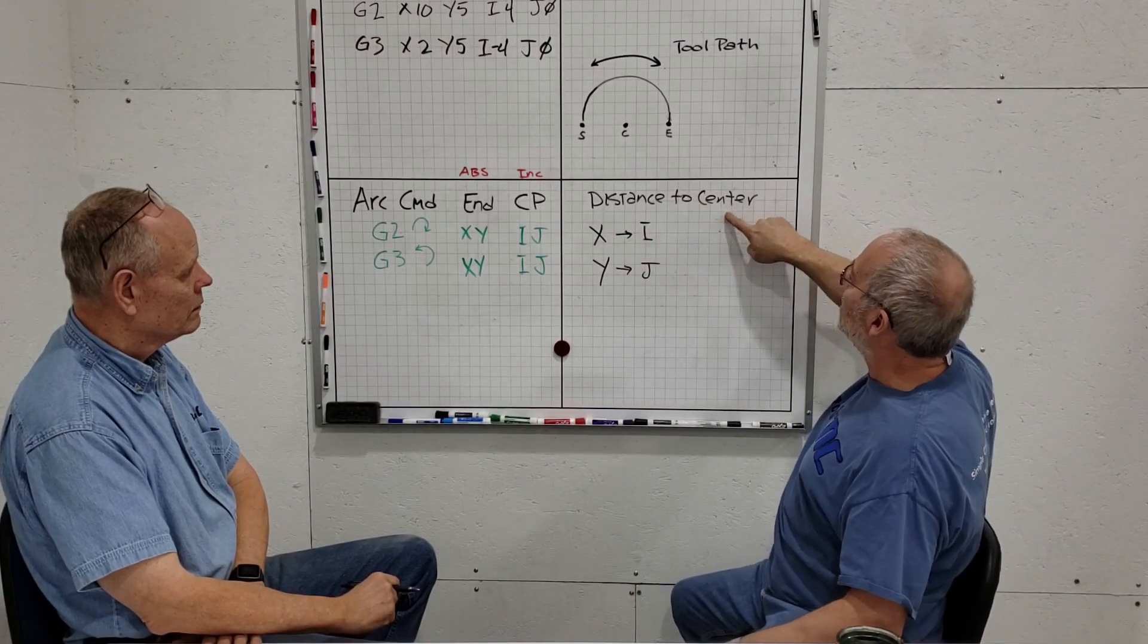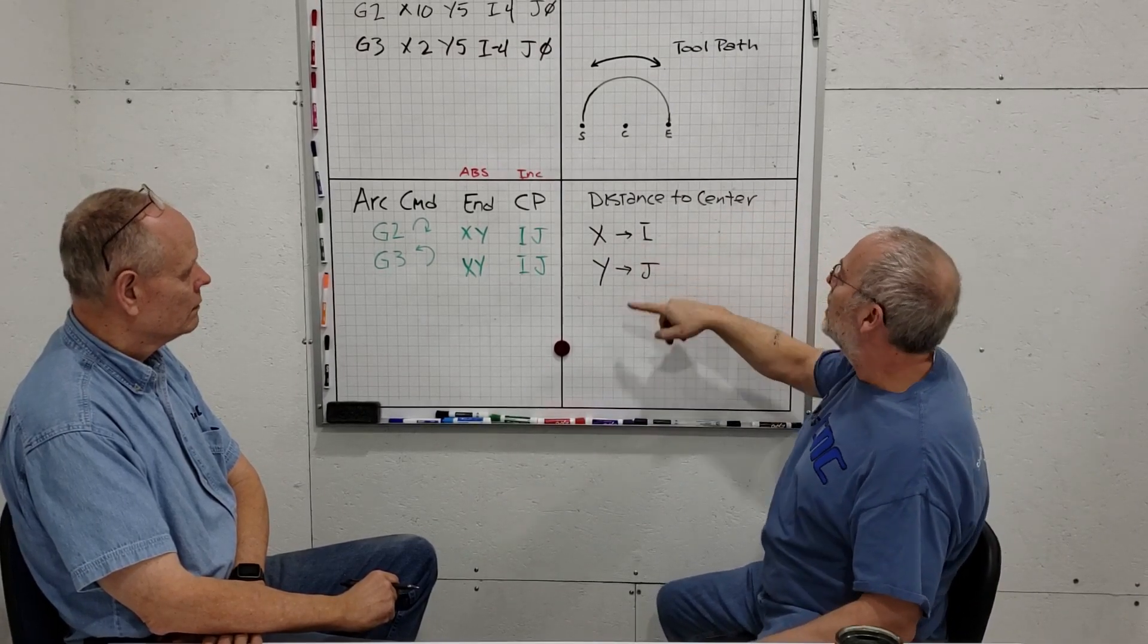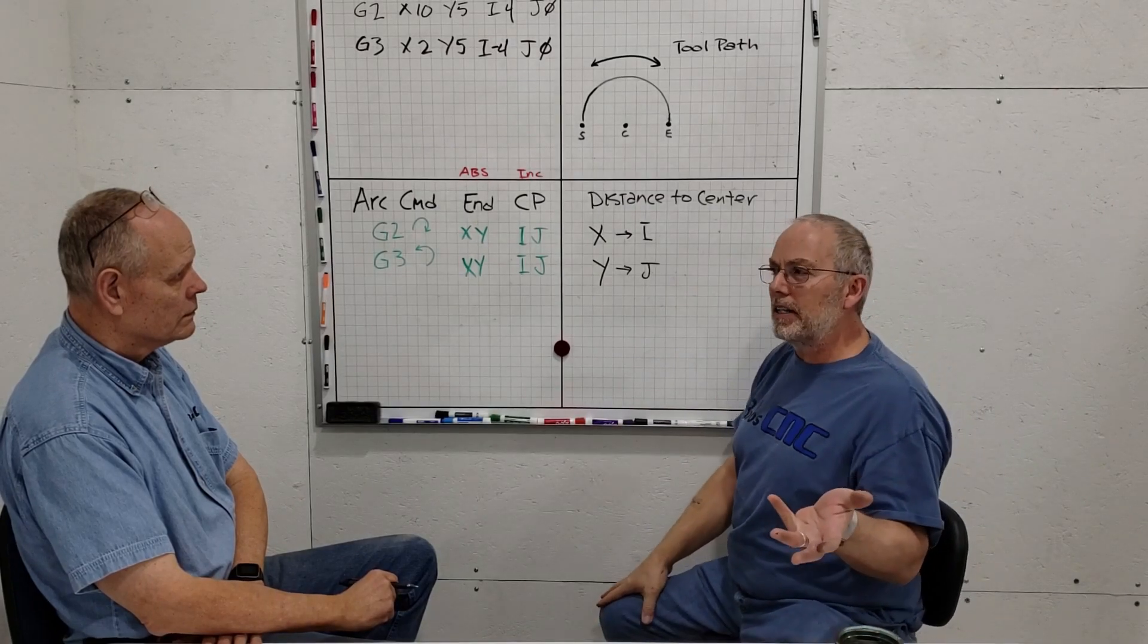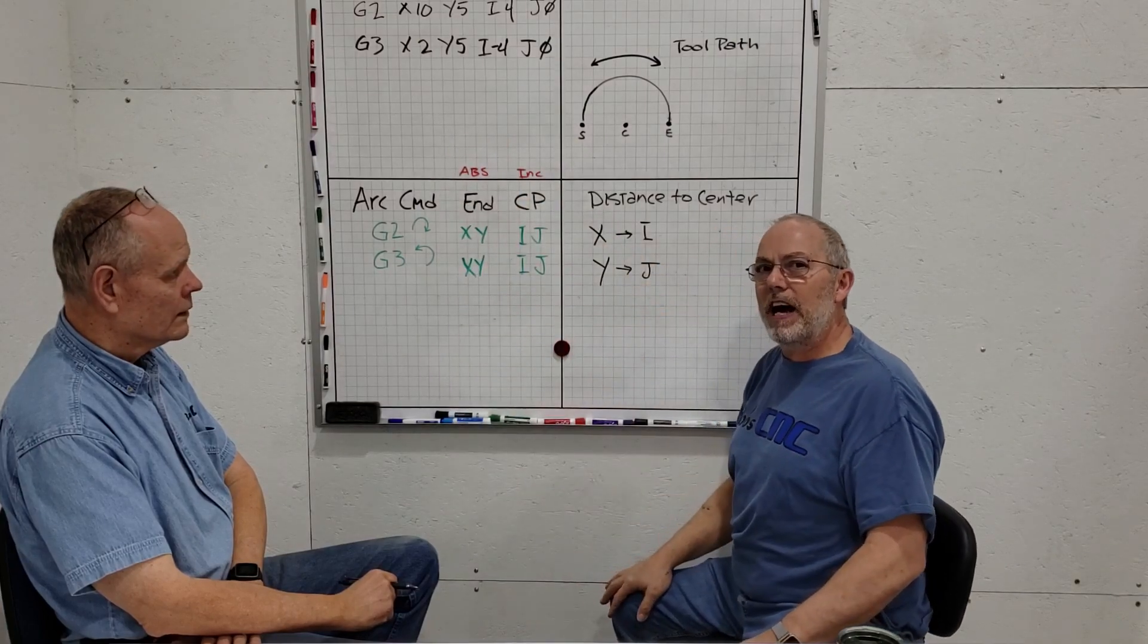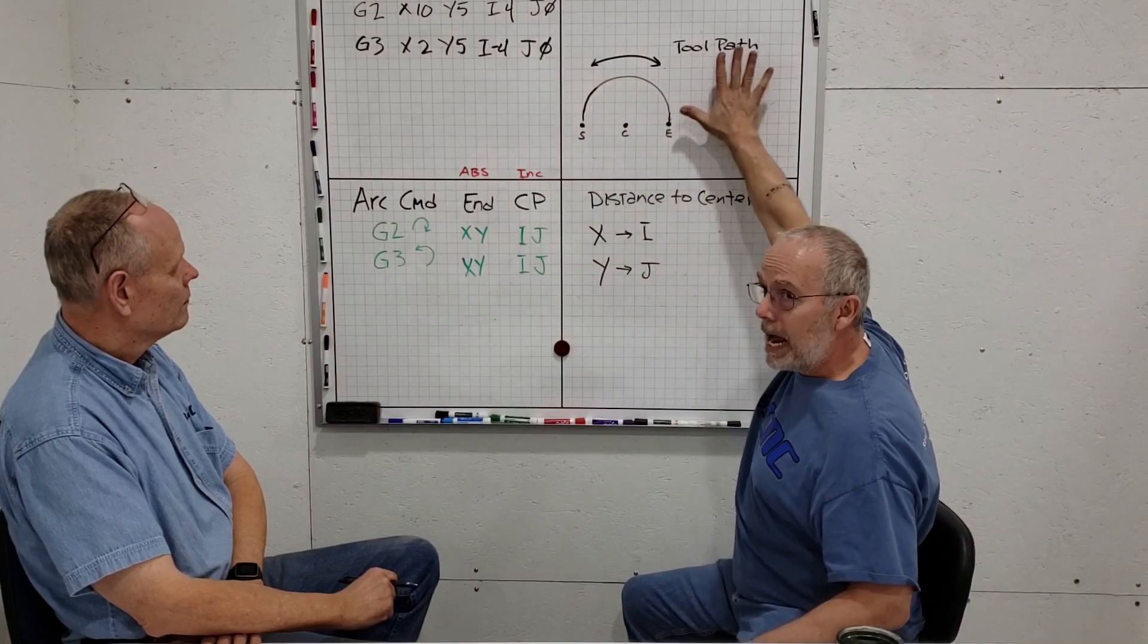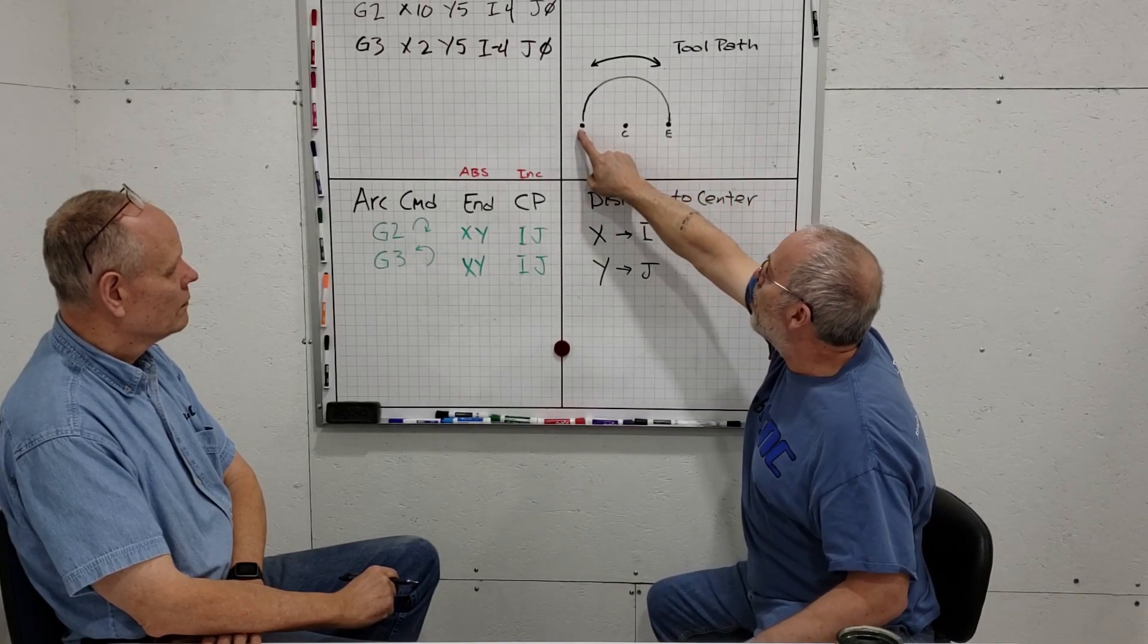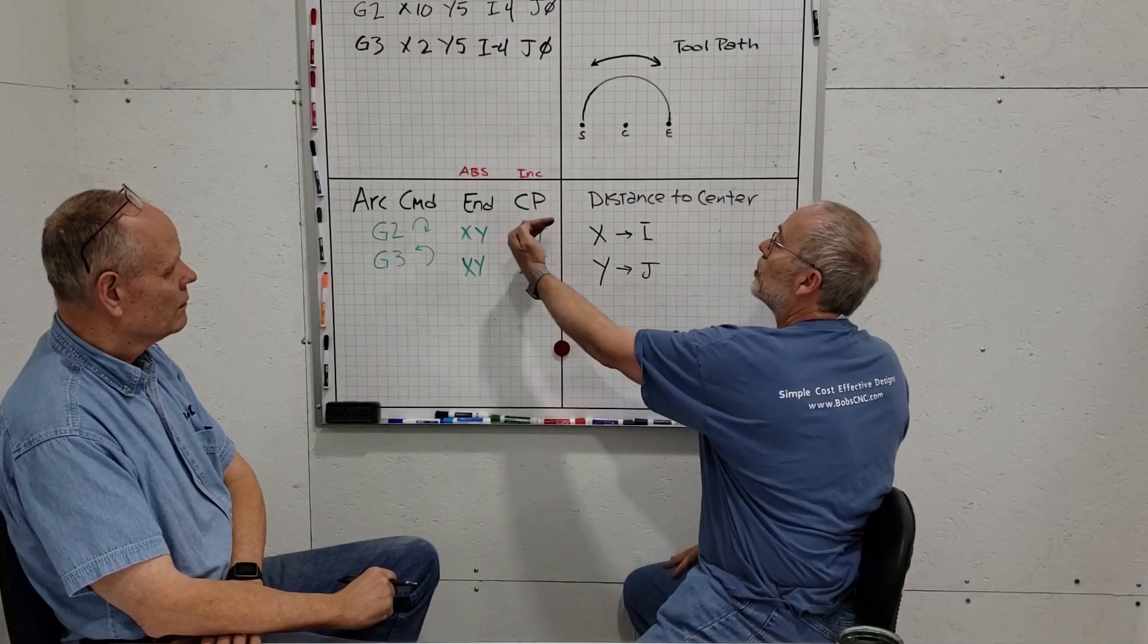If you're a vector kind of person, this makes sense to you. If not, it's pretty simple. We have an XY coordinate system, and the components are I for moving in the X direction and J for moving in the Y direction. Think of it like this: the distance to the center in the X direction is I, and the distance to the center in the Y direction is J.